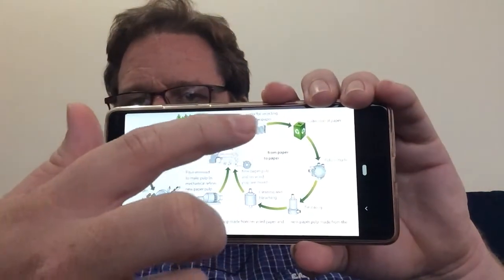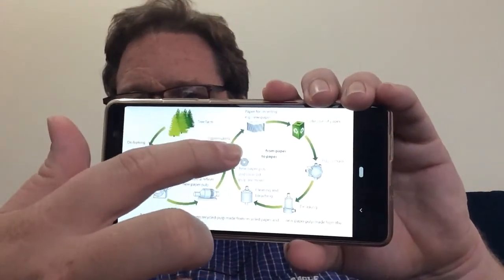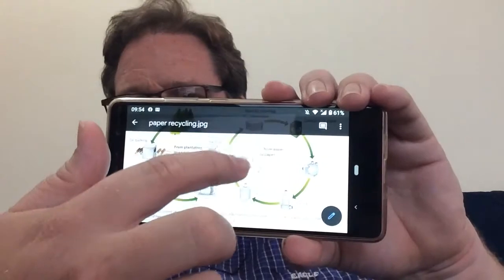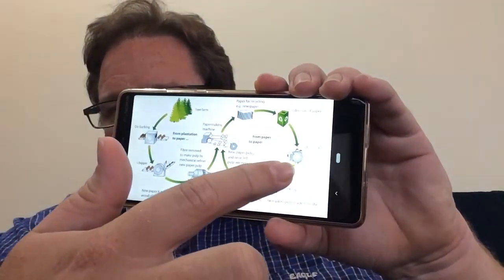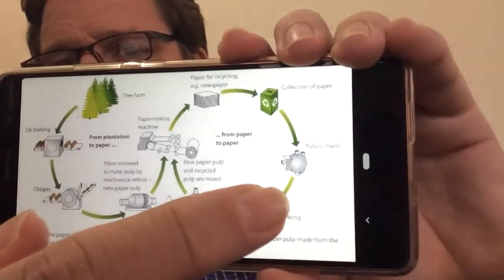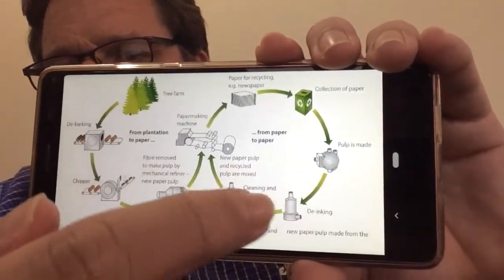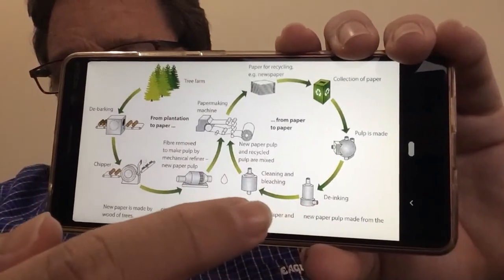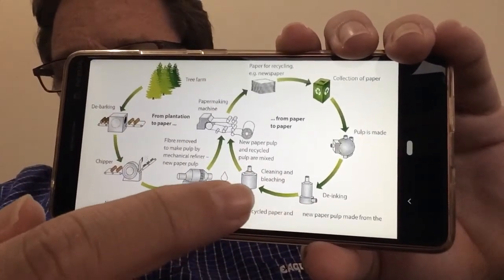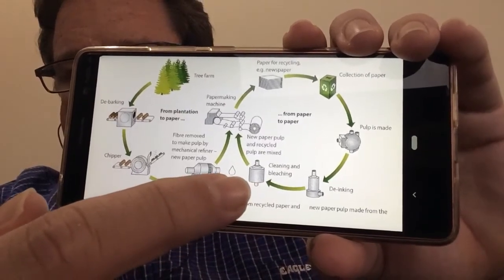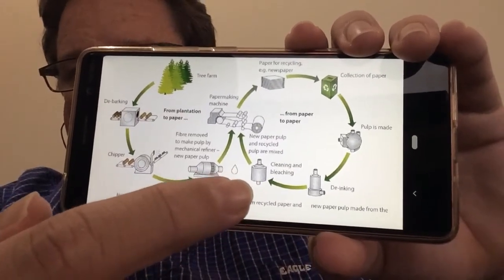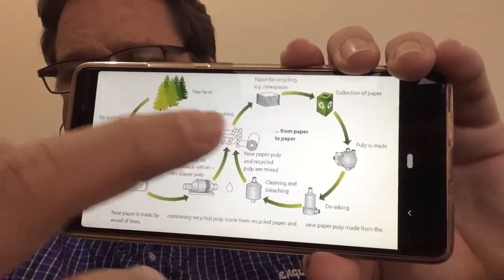And that new paper, if it's used for newspapers or something that can be recycled, is then collected and they make a pulp out of it. They de-ink it, put it through some chemicals, bleach it, and make it white again. Then they add it back into the paper mix.